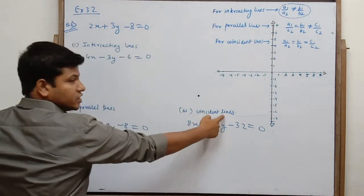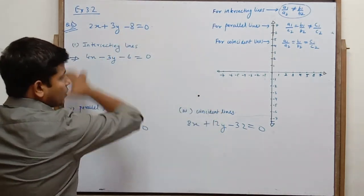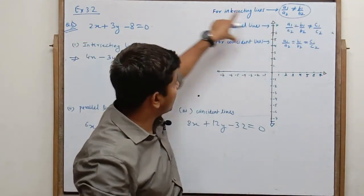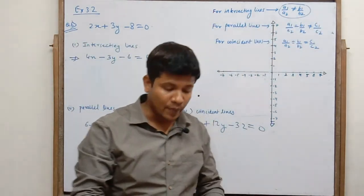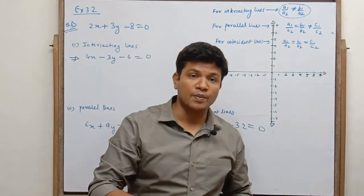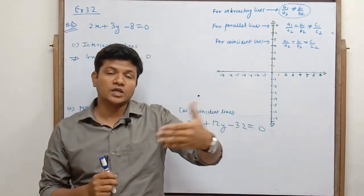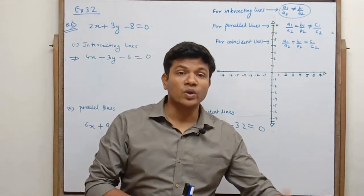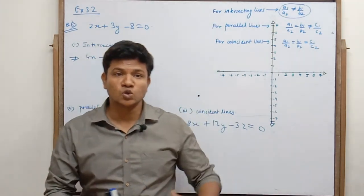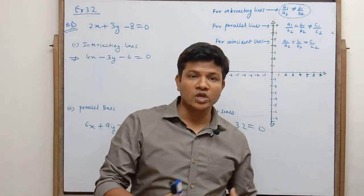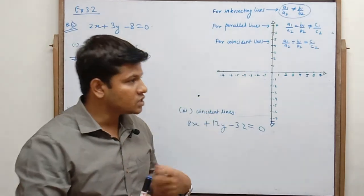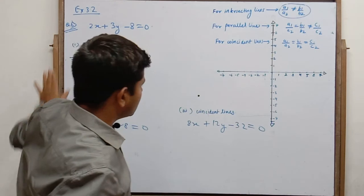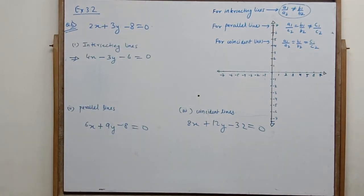So this was our question. Our understanding is very good — coincident line, parallel, intersecting. We have also seen consistent and inconsistent solutions: infinite solutions and unique solutions. We need to know these concepts. If we are aware of them, then we will be able to solve questions. This was question number 6.